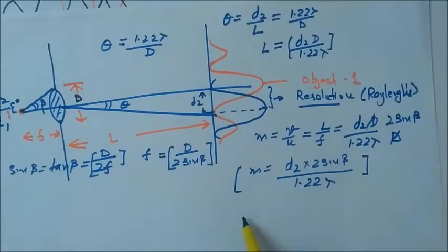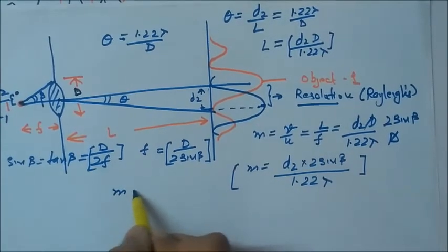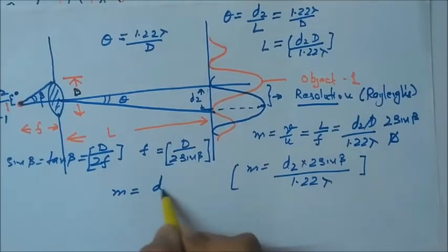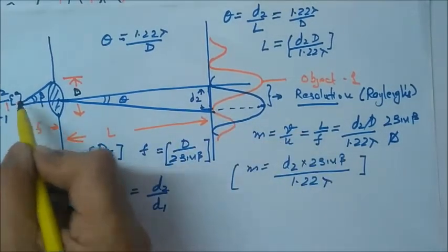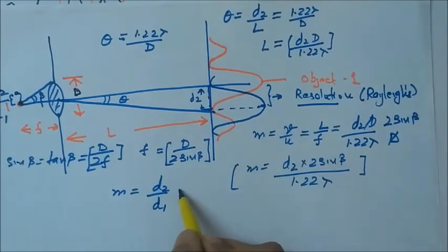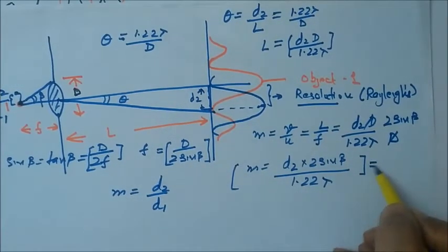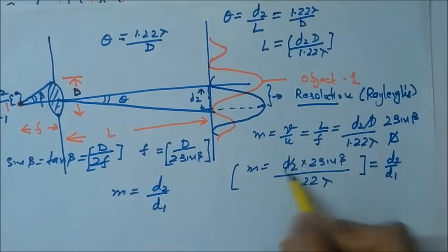We know that magnification will also equal D2 upon D1, the separation between the image and the separation between the objects. So we can equate this equal to D2 upon D1. D2 gets cancelled.